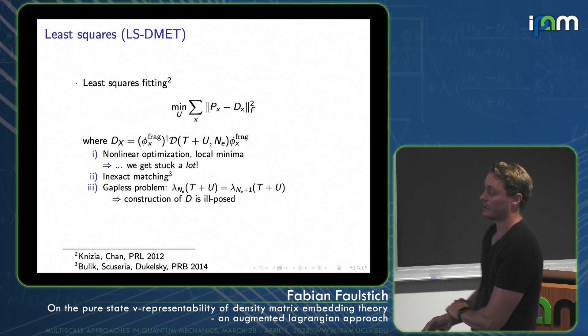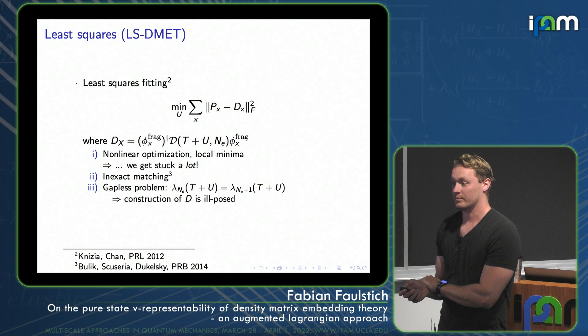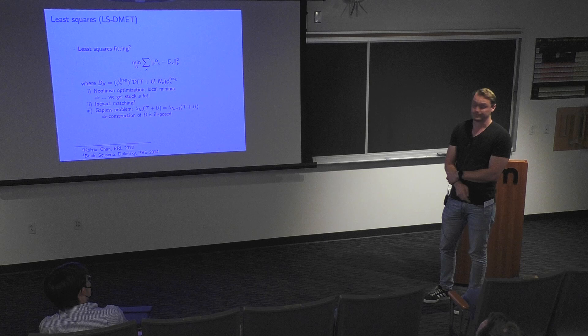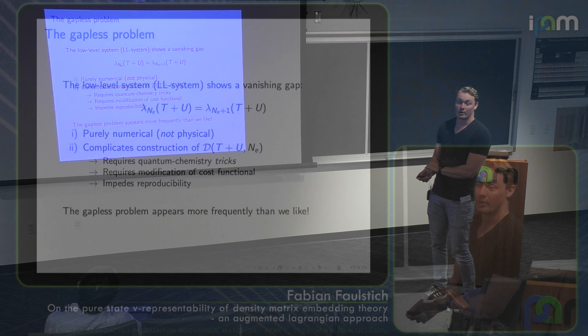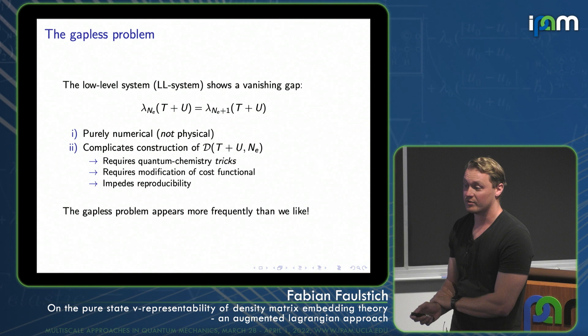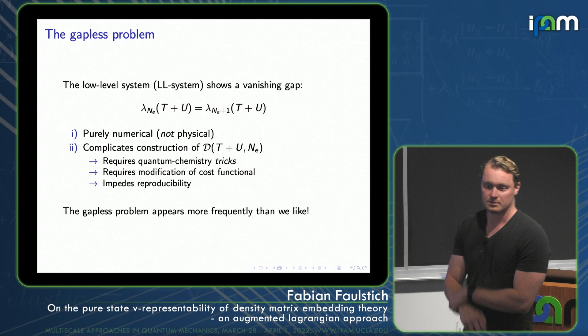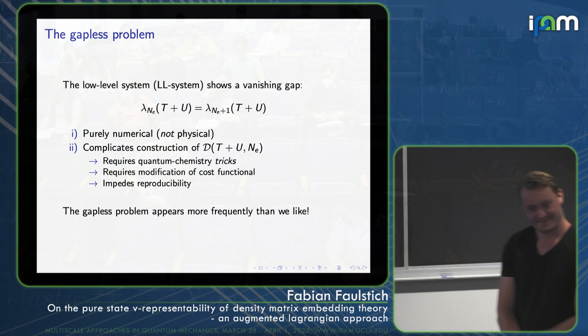Another thing I want to focus on is a problem that crystallized over the past five years: your low-level Hamiltonian actually becomes gapless. This causes a lot of problems in the optimization. The construction of D is ill-posed if the HOMO and LUMO states are degenerate, because you have a number of orbitals to pick from to construct your density matrix. At this current state, we believe this is a purely numerical artifact — we do not see a systematic connection between a vanishing low-level gap and a specific physical phase of the system.